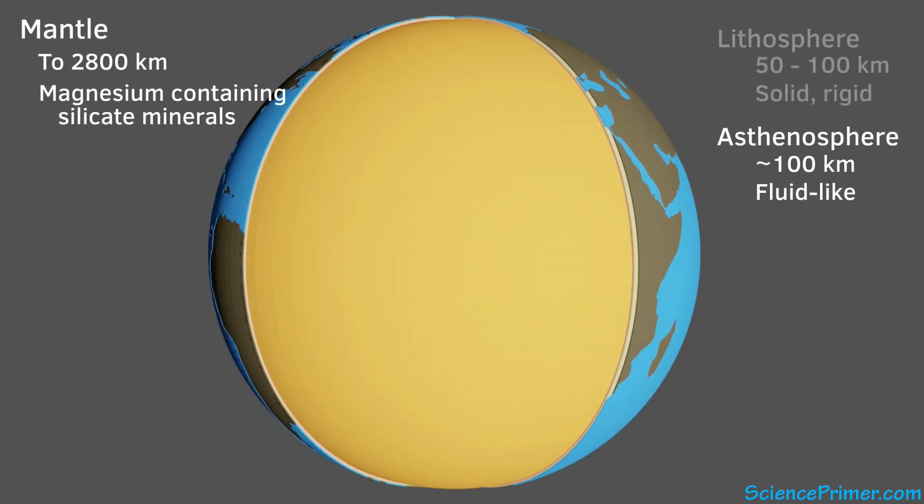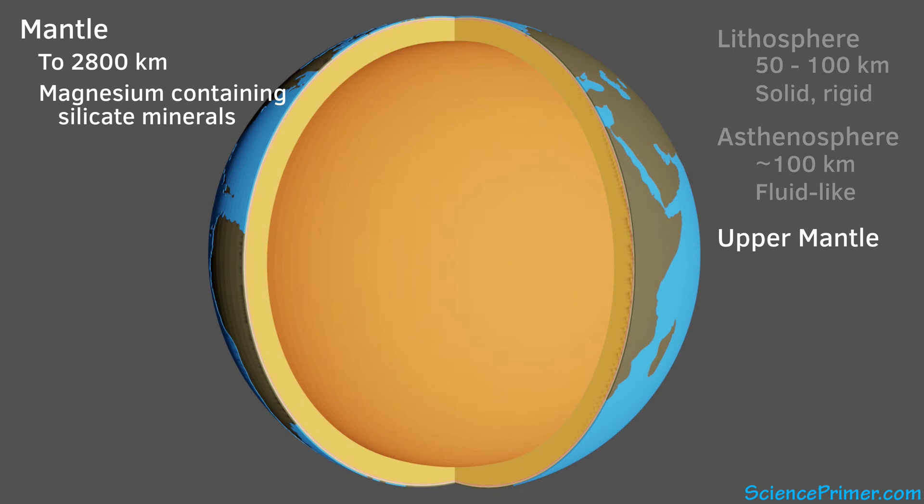The upper mantle is still somewhat ductile, but less fluid-like than the asthenosphere above it. It extends from the bottom of the asthenosphere down about another 500 kilometers.